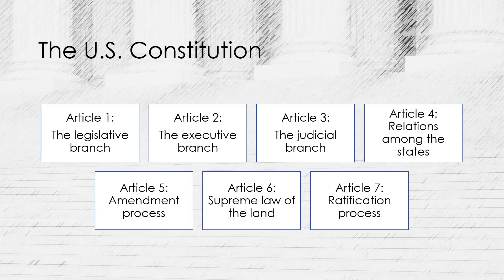The seven Articles of the U.S. Constitution establish the three branches of government: the legislative, executive, and judicial. Article 1 establishes the legislative branch, which consists of the Senate and the House of Representatives. Article 2 establishes the executive branch, which consists of the President, Vice President, and various executive departments and agencies. Article 3 establishes the judicial branch, which consists of the Supreme Court and other federal courts.